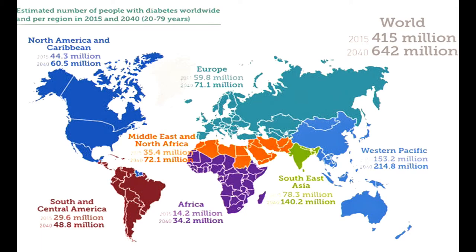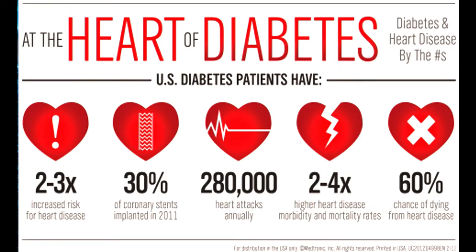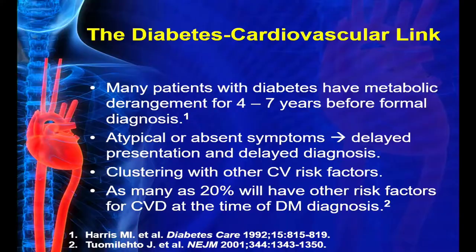Diabetes is very prevalent globally, as is heart disease, and in terms of their relationship: patients with diabetes have a 2 to 3 times increased risk of heart disease, accounting for 280,000 heart attacks annually in the US, with morbidity and mortality rates 2 to 4 times higher than non-diabetic patients. A patient with diabetes has a 60 percent chance of dying from heart disease. Many patients have metabolic derangement for 4 to 7 years before formal diagnosis; because diabetes affects the neurological system, symptoms are often atypical or absent, giving rise to delayed presentation and diagnosis.